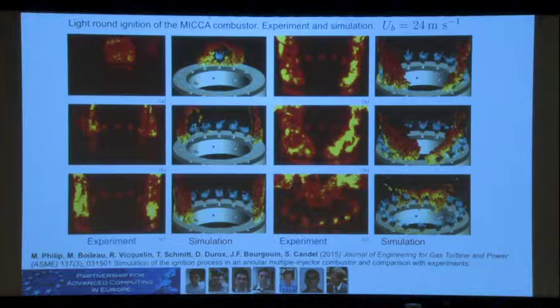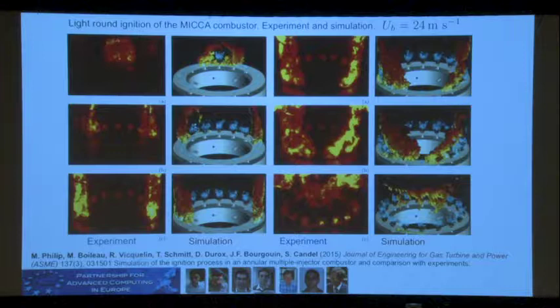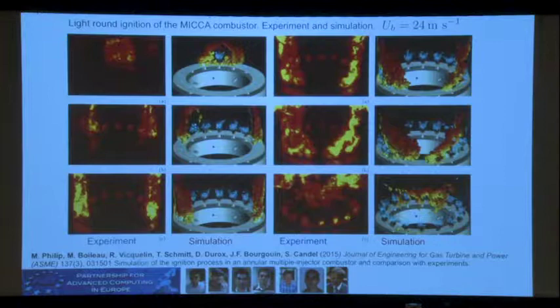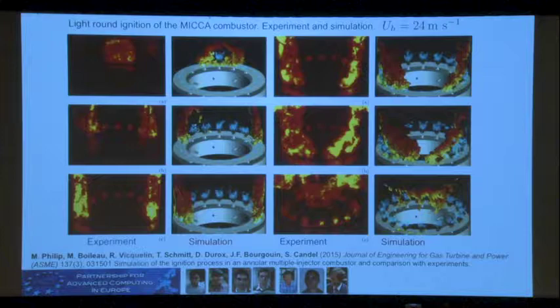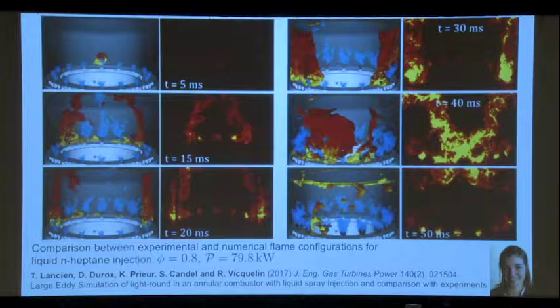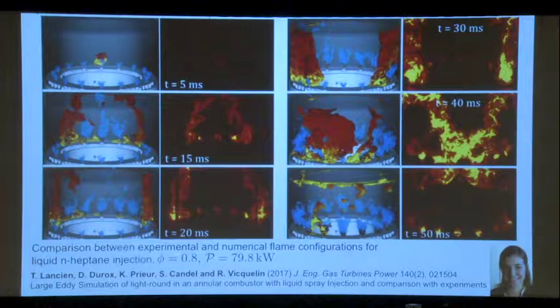Mathieu Boileau also did some of the early ignition studies in fully annular combustors — a project supported by the European community requiring one million hours per calculation. We then pursued that by going into LES including the spray. This is a calculation with spray done by Théa L'Ancien. The experiments are shown here alongside the calculations. It is not as easy to do calculations with sprays as in the premixed mode.